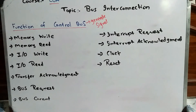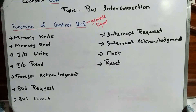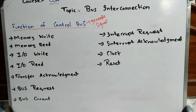Bus request is when a device requests to use the bus. Bus grant is when the required device is granted access to the bus. The control bus generates a signal to indicate that the required device has been granted the bus.